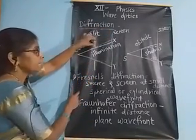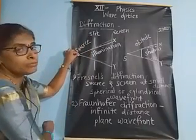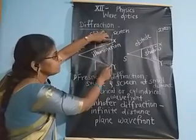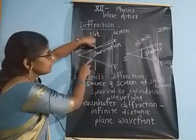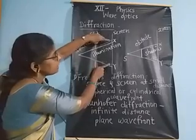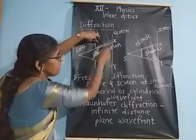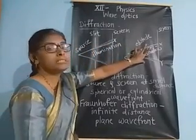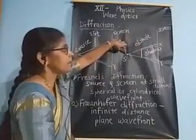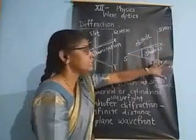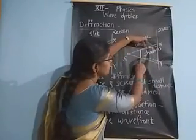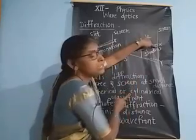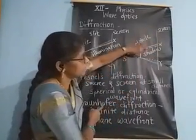If we have a slit illuminated by a source of light, we get an illuminated part on the screen and on both sides we get the geometrical shadow. Near the edge of the obstacle, light gets bent and enters into the geometrical shadow part. Similarly for an obstacle, light bends near the edges and the x and y portions fall in the geometrical shadow.